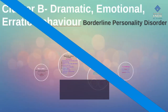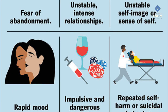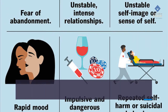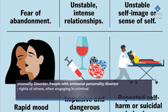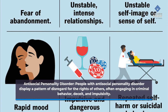Cluster B: dramatic, emotional, or erratic behavior. Antisocial personality disorder — people with antisocial personality disorder display a pattern of disregard for the rights of others, often engaging in criminal behavior, deceit, and impulsivity.